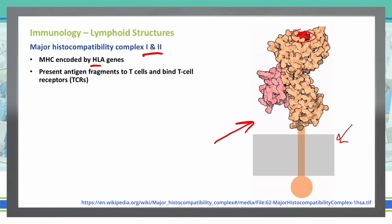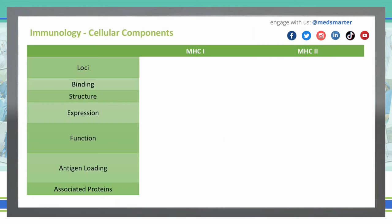Let's talk about the different components of MHC1 and MHC2. I'm going to refer to both as MHC1 and MHC2 from now on. We're going to talk about where it's located, the binding site structures, expressions, functions, antigen loading, and associated proteins in this particular chart.